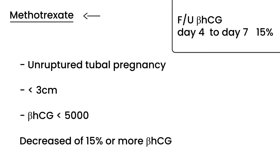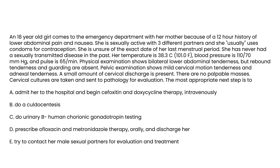Now let's discuss a couple of clinical vignettes. An 18-year-old girl comes to the emergency department with a 12-hour history of lower abdominal pain and nausea. She is sexually active with three different partners and usually uses condoms. She is unsure of the exact date of her last menstrual period and has never had a sexually transmitted disease. Temperature is 101, blood pressure 110/70, pulse 65.